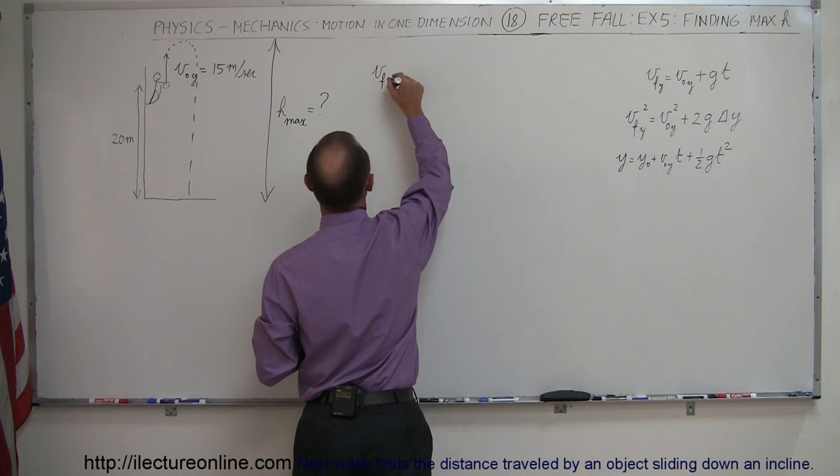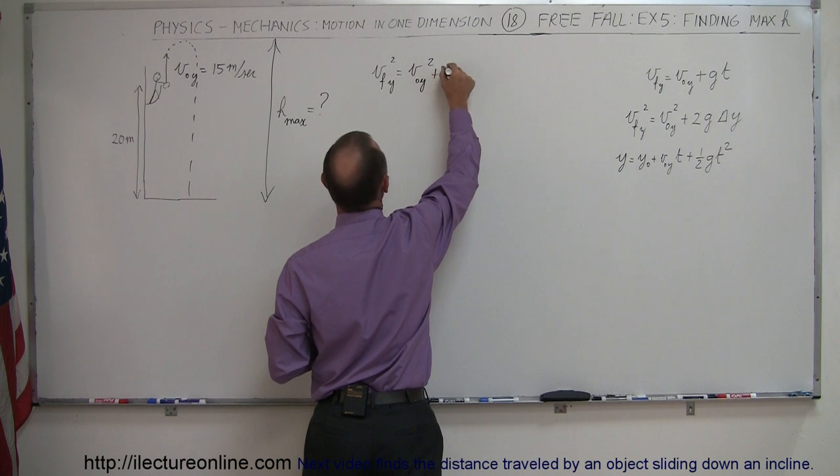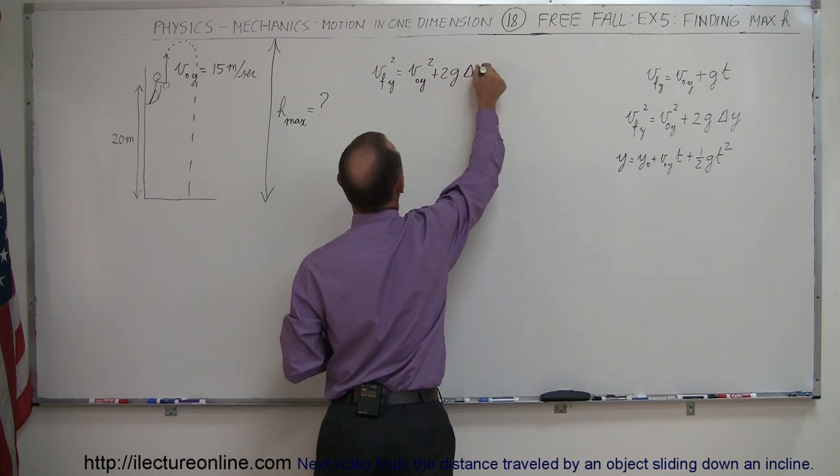So we have V final in the Y direction squared equals V initial in the Y direction squared plus 2G times the change in the height, delta Y.